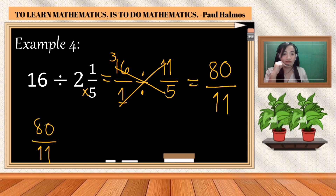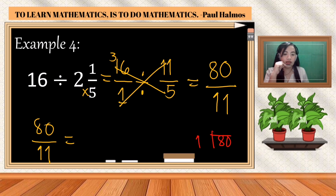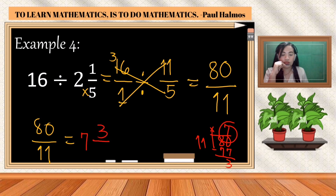Our answer is eighty over eleven, which is an improper fraction, so we convert it to a mixed number. Divide 80 by 11: eleven goes into eighty seven times (7 times 11 is 77), with a remainder of three. The whole number is seven, the numerator is three, and we copy the denominator eleven. The final answer is seven and three-elevenths.